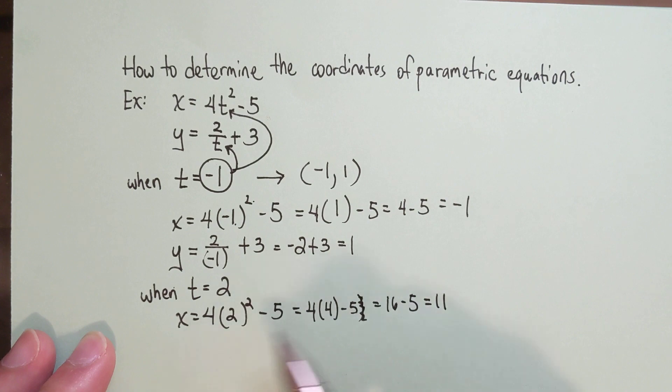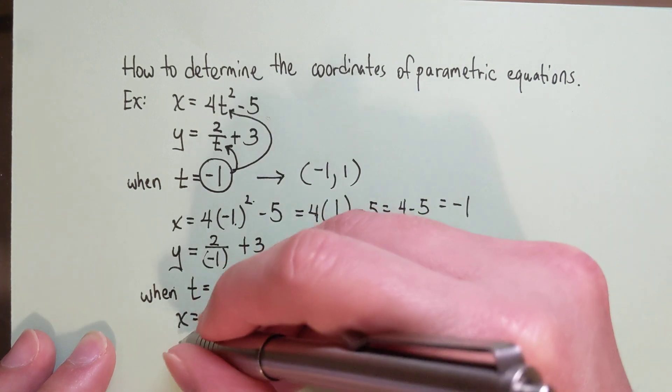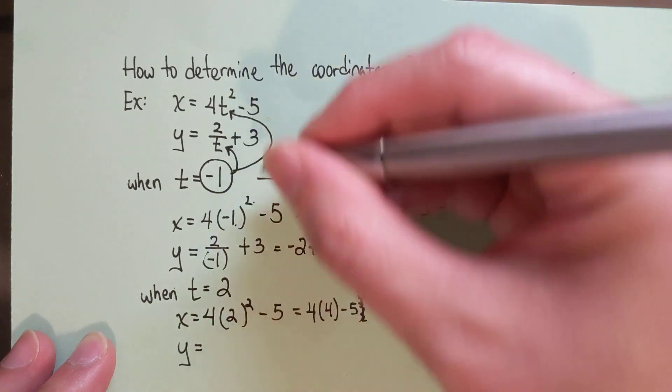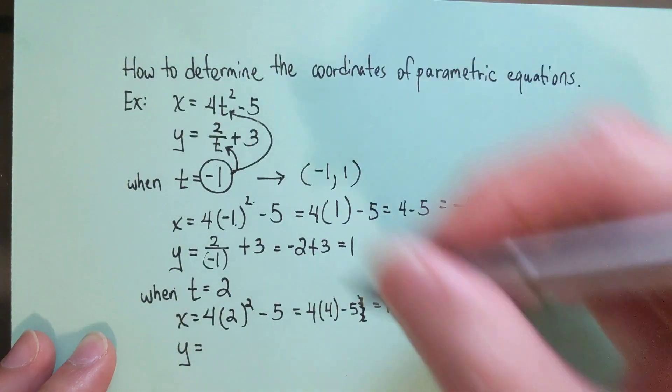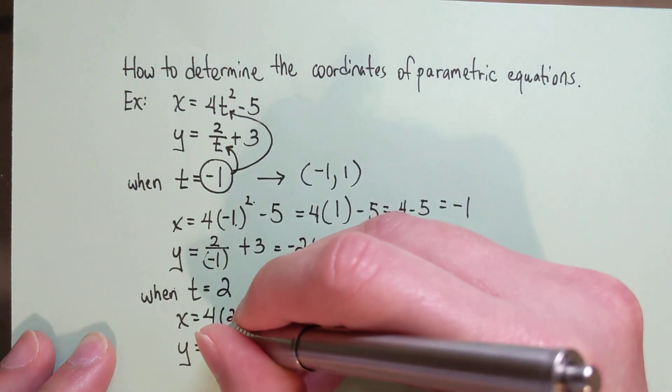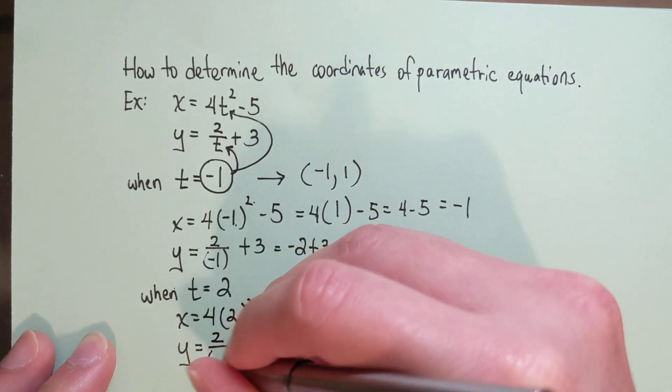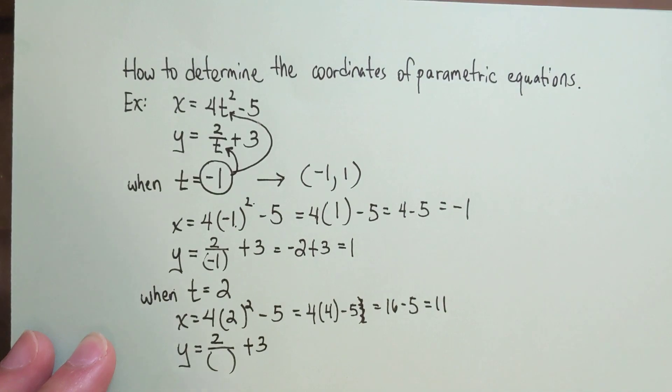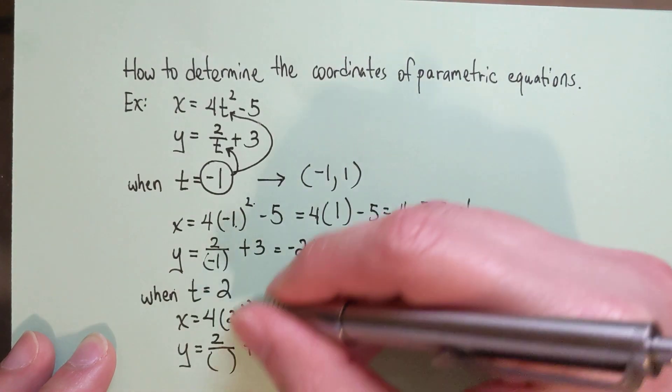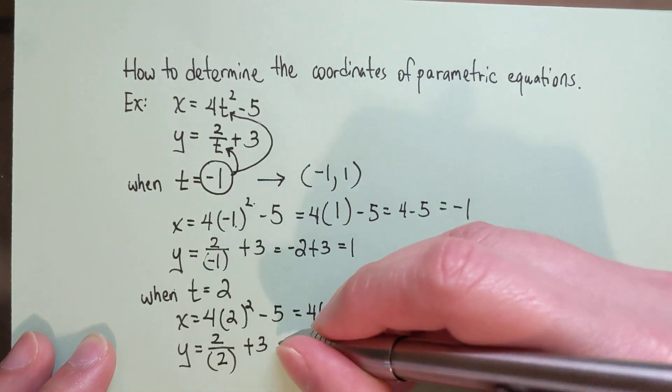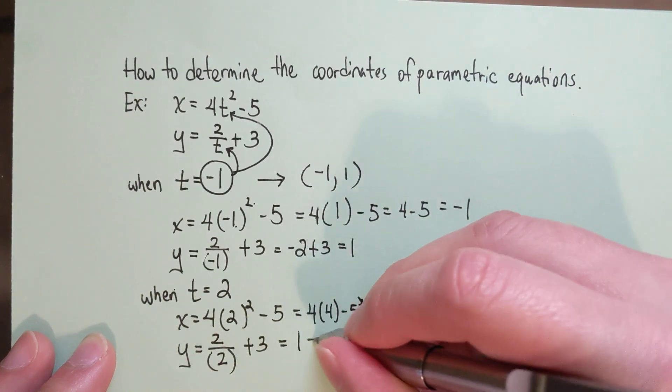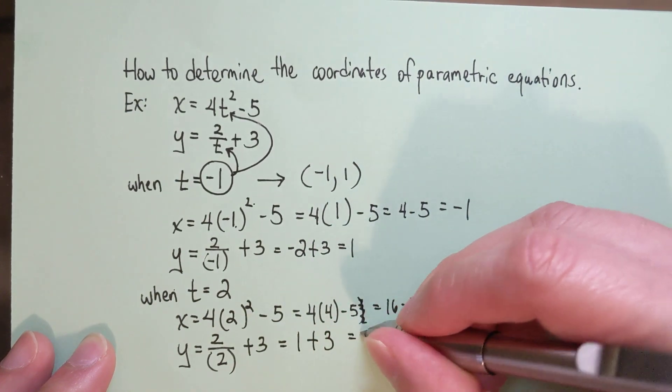So the x coordinate would be 11. The y coordinate would be following this equation here once more, which is 2 over t plus 3. And in this case, t is 2. 2 divided by 2 is 1, and 1 plus 3 is 4.